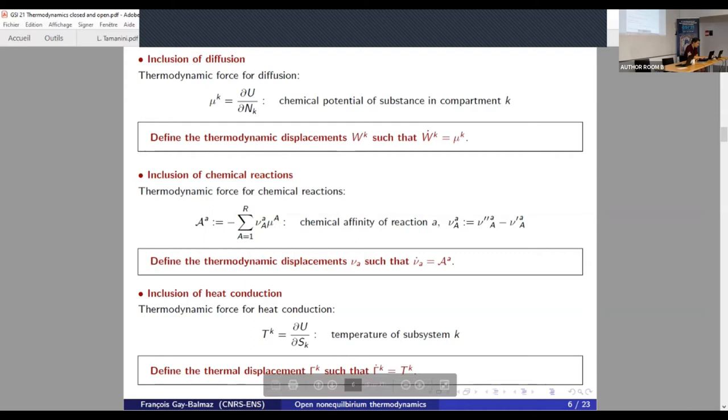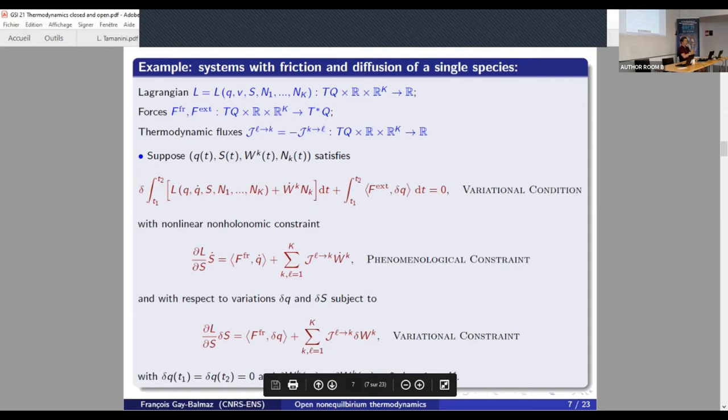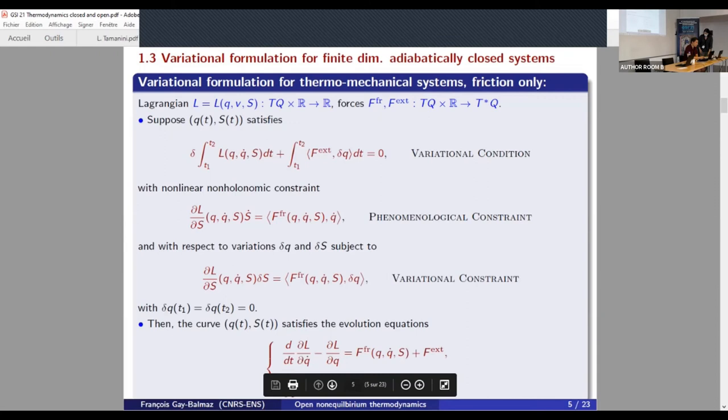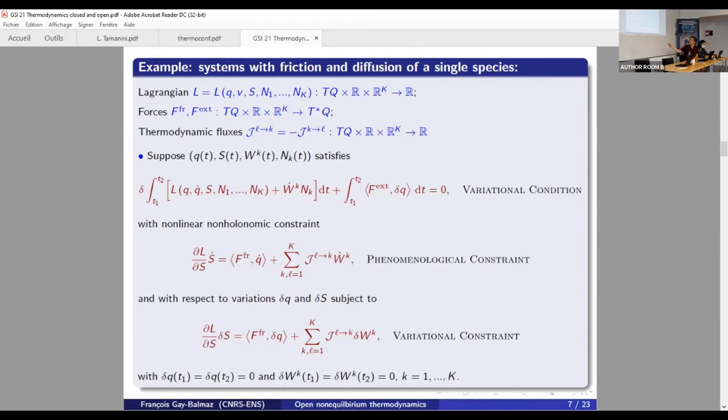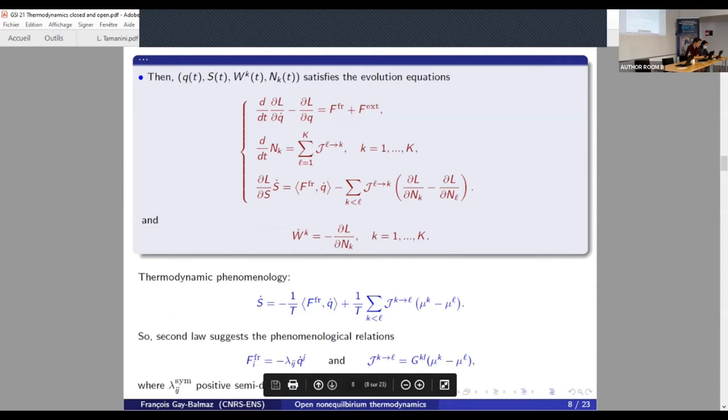So thanks to this, thermodynamics looks like mechanics. So an instance of this is how we apply this setting to the diffusion, for this case. So it's the same kind of principle, but instead of having just the mechanical part here, you add how many process you have. Here you have the process of diffusion. So instead of friction acting on velocity, you have diffusion flux acting on the displacement associated to diffusion, which is W dot, as I introduced earlier. But the shape of the variational formulation stays the same as if you were just doing the previous case.